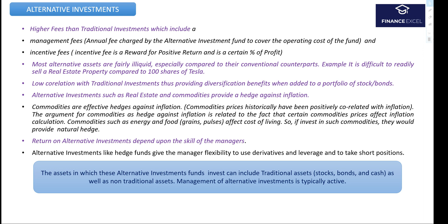Returns on alternative investments depend upon the skill of the manager. Equity and bond markets are pretty much efficient — all public and private information is reflected in their prices. But alternative investments operate in a market which is inefficient, and it depends upon the skill of the manager to exploit these inefficiencies. A skilled manager can spot and exploit inefficiencies to generate active returns, while a less skilled manager may not be able to do so.